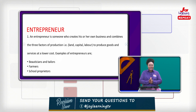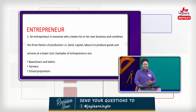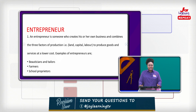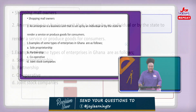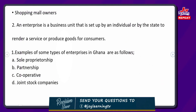So these are the three factors of production. Some examples of people who are entrepreneurs are beauticians and tailors, farmers, school proprietors — those who own the private schools — and those who also have shopping malls; they are also entrepreneurs.